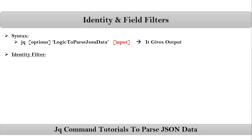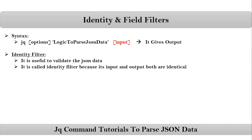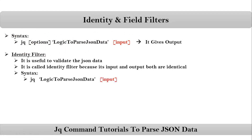First let me go with identity filter. Identity filter is useful to validate the JSON data — whether the given JSON data is valid or not. It is called identity filter because its input and output are both identical. Now let me give the syntax: if we take the logic to parse JSON data as a dot, then that is the identity filter.